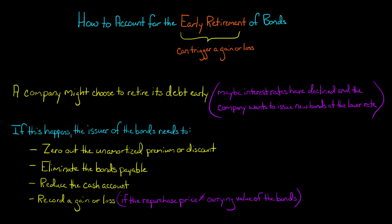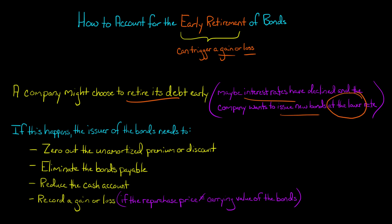In this video I'm going to show you how to account for the early retirement of bonds — specifically how to calculate the gain or loss on the early retirement, which is also known as an early extinguishment of debt, and the journal entry. First, why would a company even choose to retire its debt early? Maybe interest rates have decreased since the time the company originally issued the bonds, so the company wants to retire those old bonds and issue new bonds at the lower interest rate.